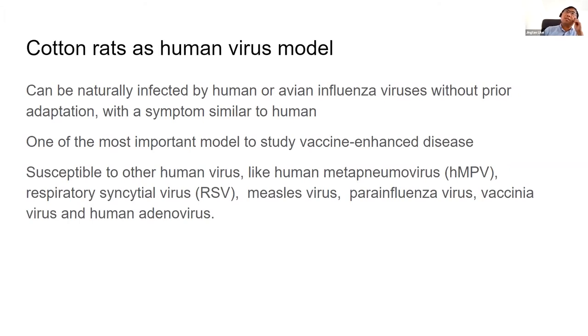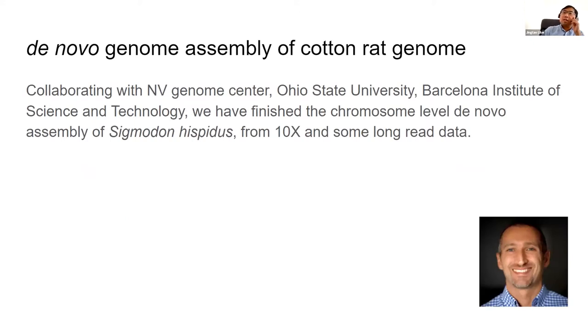In addition to this, cotton rats are also susceptible to HMPV or RSV, measles virus, parainfluenza virus, vaccinia virus, and human adenovirus. For that reason, the New York Genome Center started a project on the cotton rat whole genome assembly. This project began many years ago and dropped into a dead end because they only used 10X as the main technique.